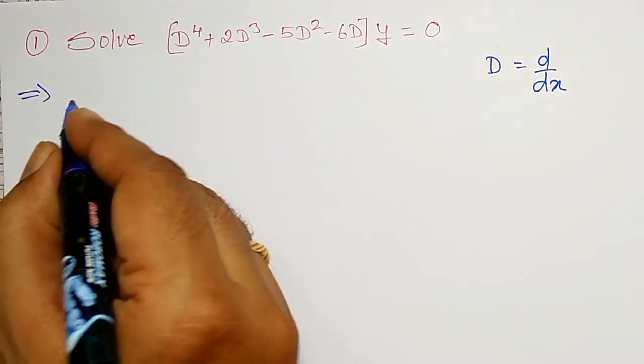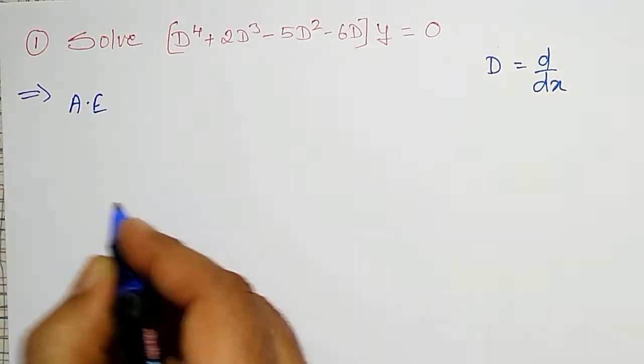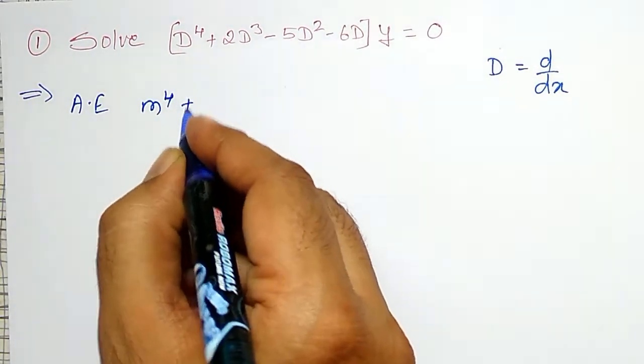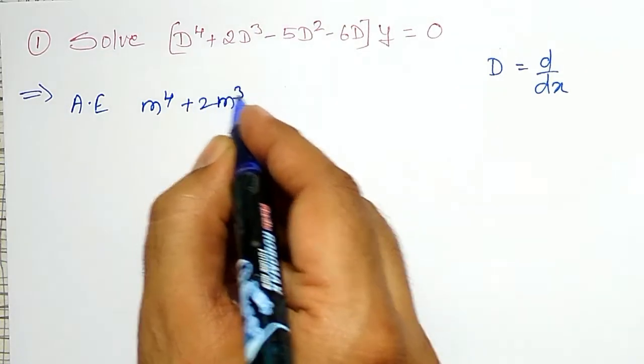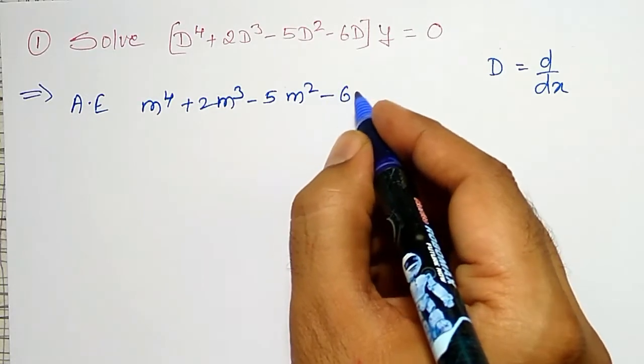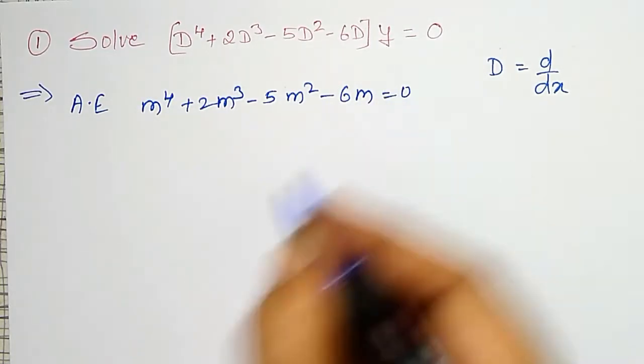To find out the roots of this, auxiliary equation I have to write. Auxiliary equation is given by m to the power 4 plus 2m cube minus 5m square minus 6m equal to 0.